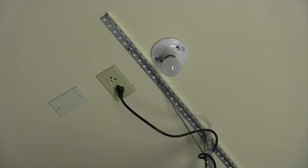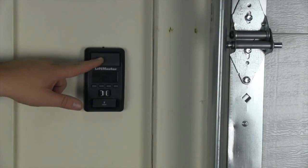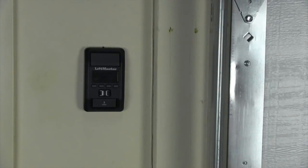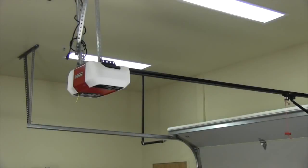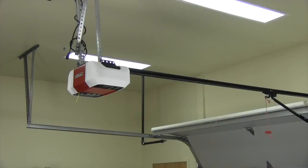Test the battery by unplugging the garage door opener. Activate the garage door opener using the door control or remote control. The garage door opener may run slower if the battery is not fully charged.